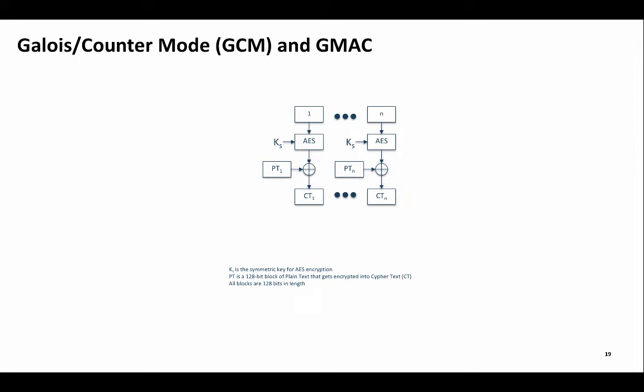However, starting the counter at 1 does not provide enough randomness. Therefore, the counter is concatenated to an initialization vector that is a nonce, where a nonce is a number used once. For Galois Counter Mode, the initialization vector is usually 96 bits and the counter is 32 bits, creating the desired 128-bit block for the AES encryption and enabling almost 2 raised to the 32nd power of encrypted data before the counter rolls over.